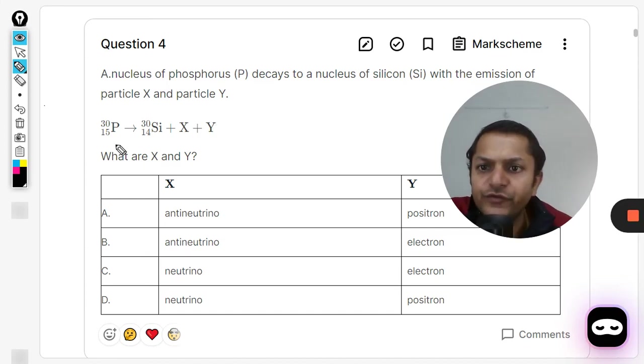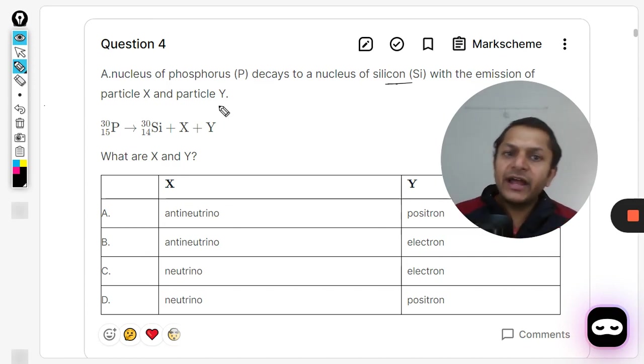In this question, a nucleus of phosphorus decays into silicon with the emission of particle X and particle Y. What are X and Y? A very beautiful question and you are going to get so many of these kind of questions, so it's very important for us in such a question what we have to see.